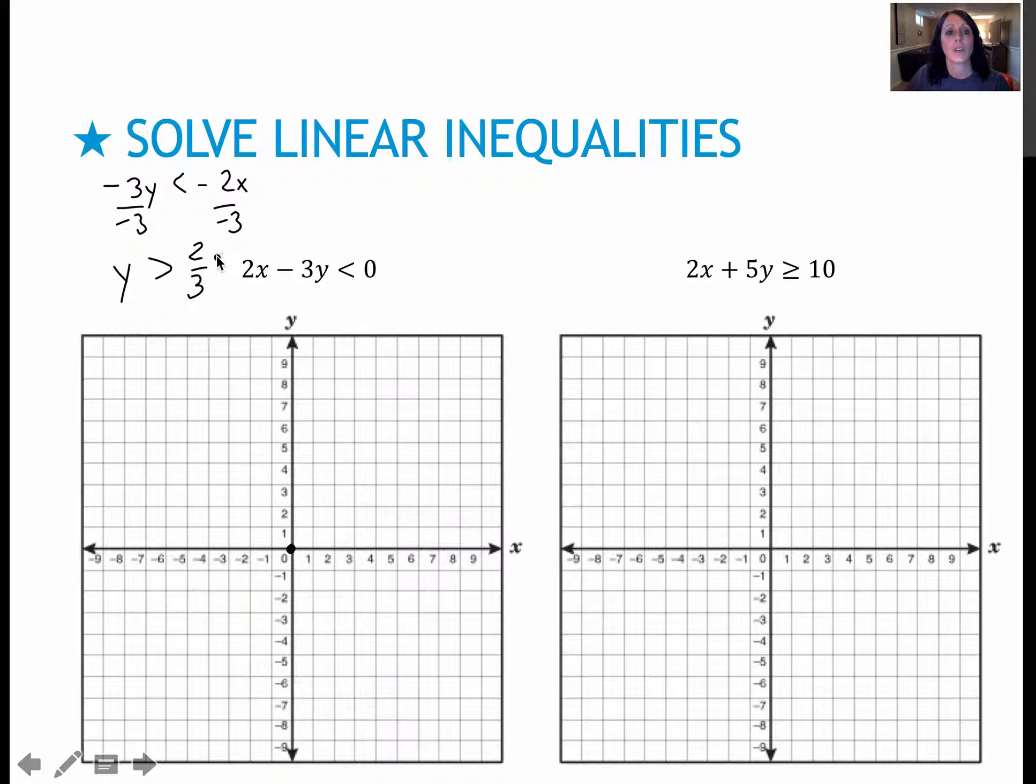And dividing by a negative obviously flips my inequality. So I have y is greater than 2 thirds x plus 0. So I'm going to go up 2 over 3, up 2 over 3. This one should be a nice dotted line.